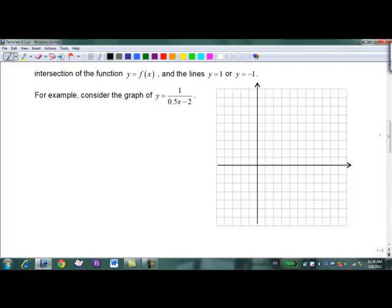So for instance consider the graph of 1 over 0.5x minus 2. So what we're going to do is let's first sketch a graph of what's in the denominator and I'm going to change the 0.5 to a half. y equals 0.5x minus 2.